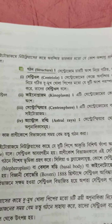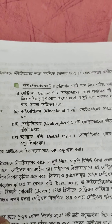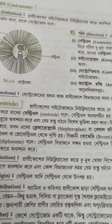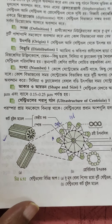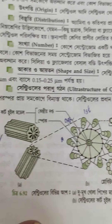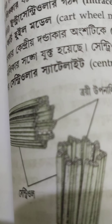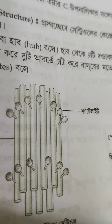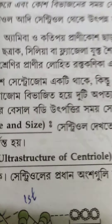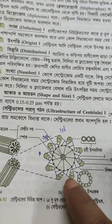Cytoplasm and kinoplasm. The centrosome contains the centrosphere. There are three different types of centrosphere.